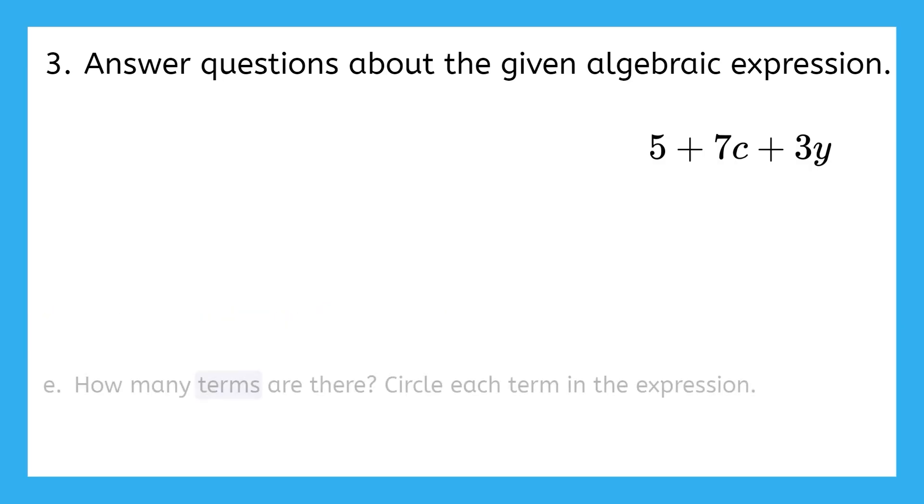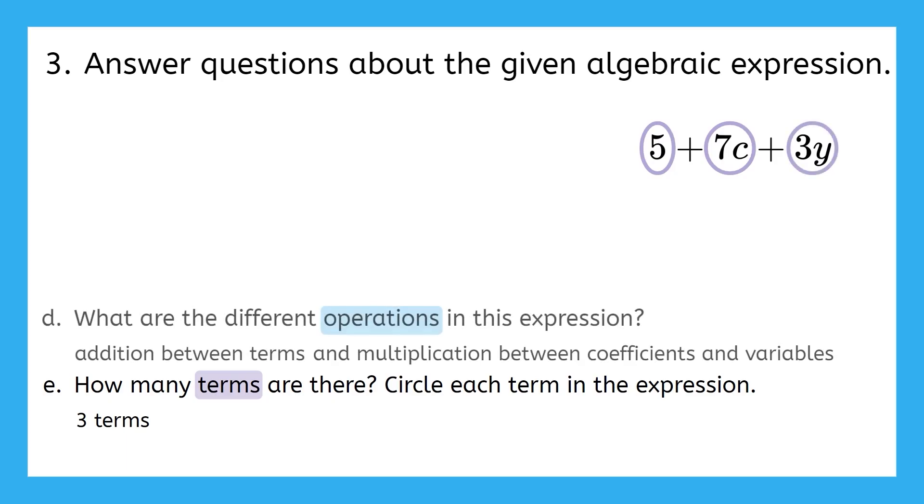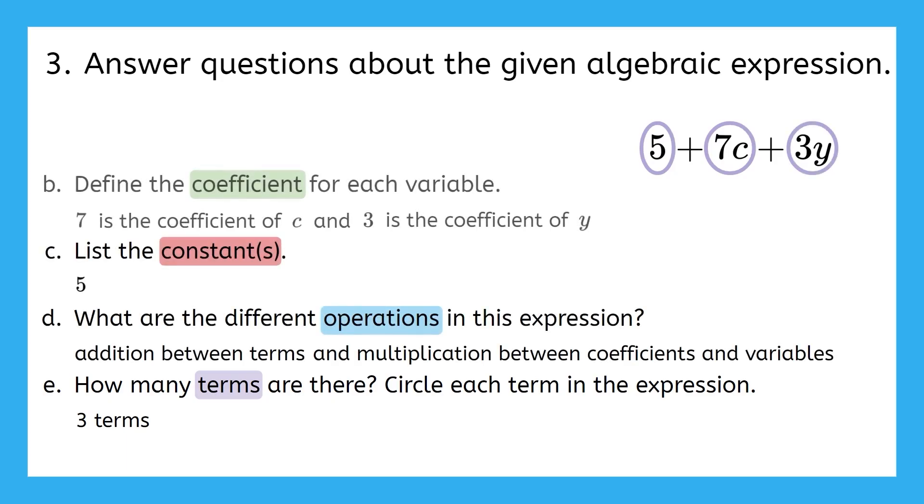So now, given what you know about operations, how many terms are there in this expression? Were you able to circle each term in the expression? Well, since we know addition and subtraction are what separate terms, we have three terms here. There are five, seven C, and three Y. Really great work examining the different parts of this algebraic expression.